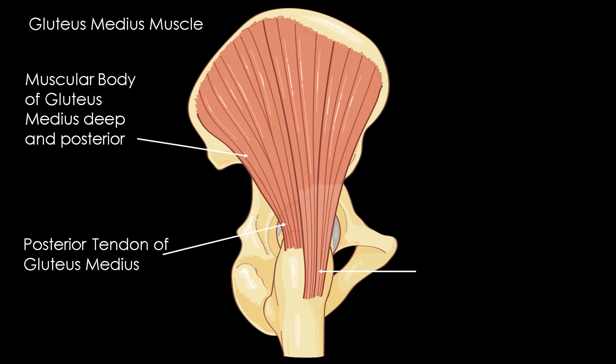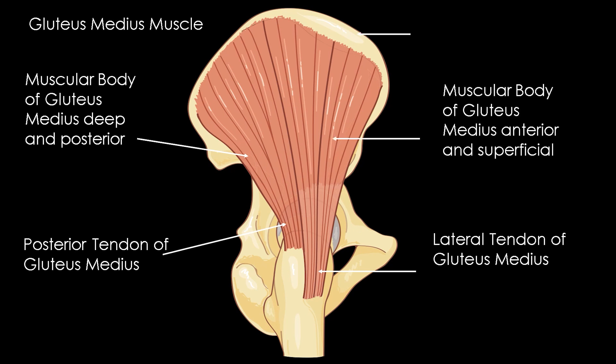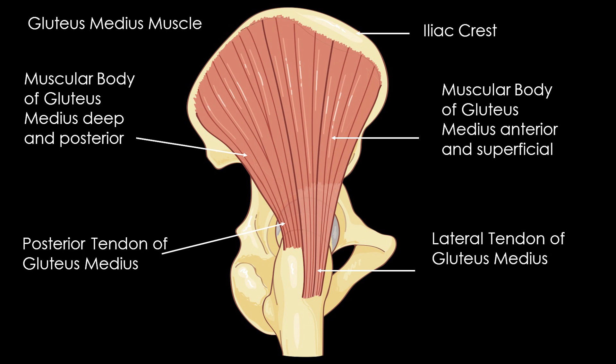The gluteus medius is located behind and above the gluteus minimus, which it covers almost entirely. It originates from the anterior three-fourths of the iliac crest and the underlying surface of the external iliac fossa between the two semicircular lines, the anterior superior iliac spine by a common tendon with the gluteus maximus and tensor of the fascia latae, the deep face of the deep gluteal fascia, inconstant fibrous arcades stretching from the large sciatic notch to the sacroiliac joint, and the arch of Brisson which extends behind the deep gluteal fascia.